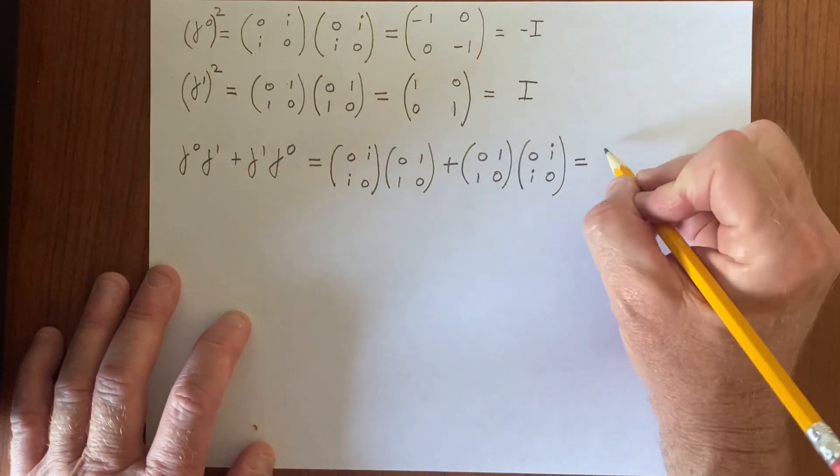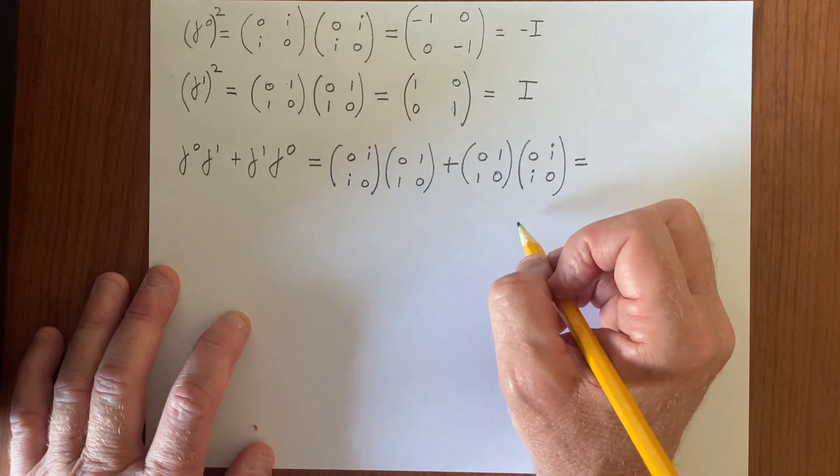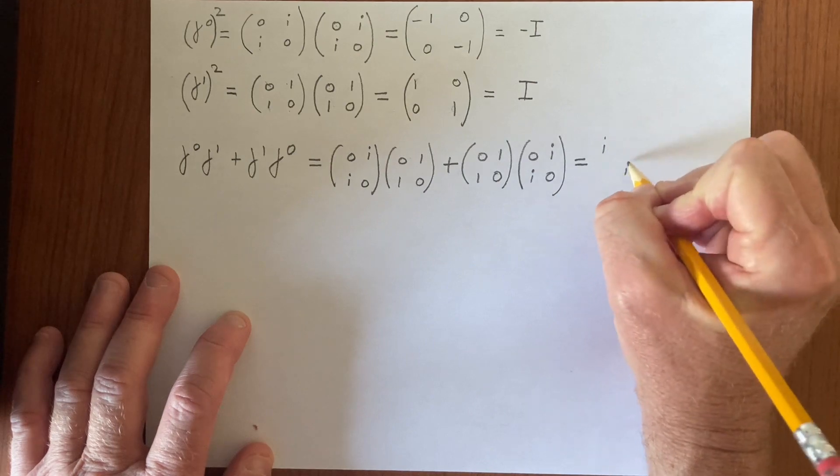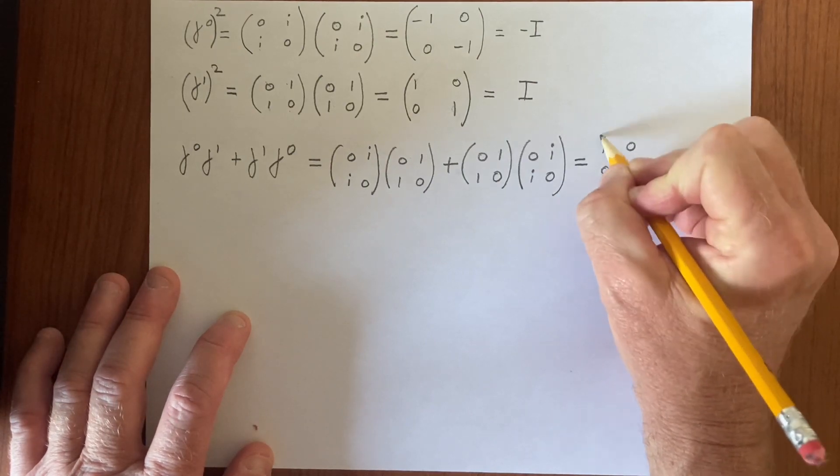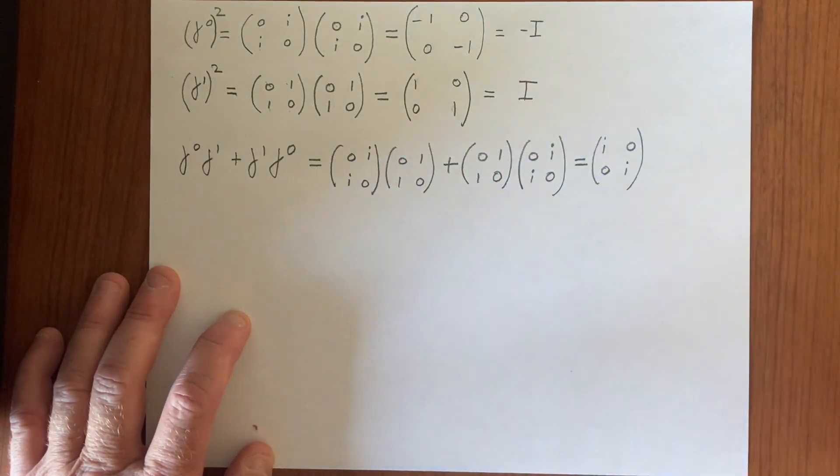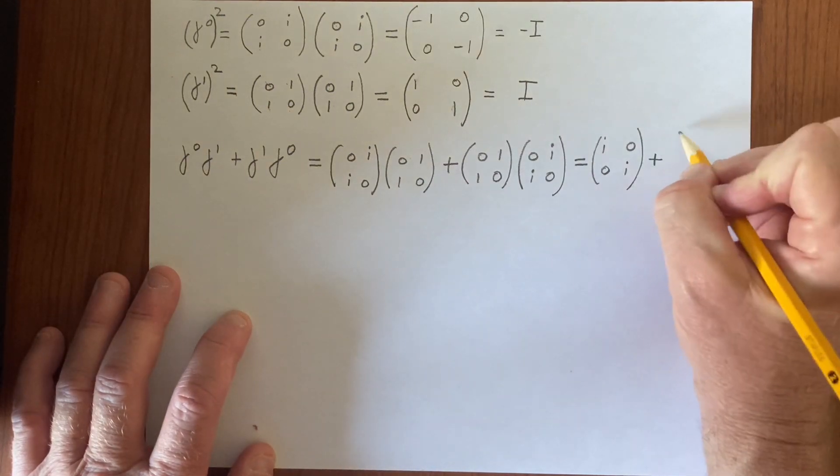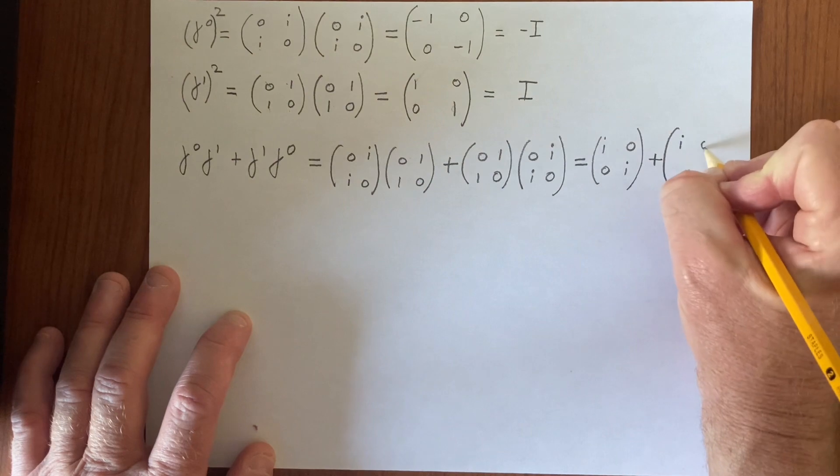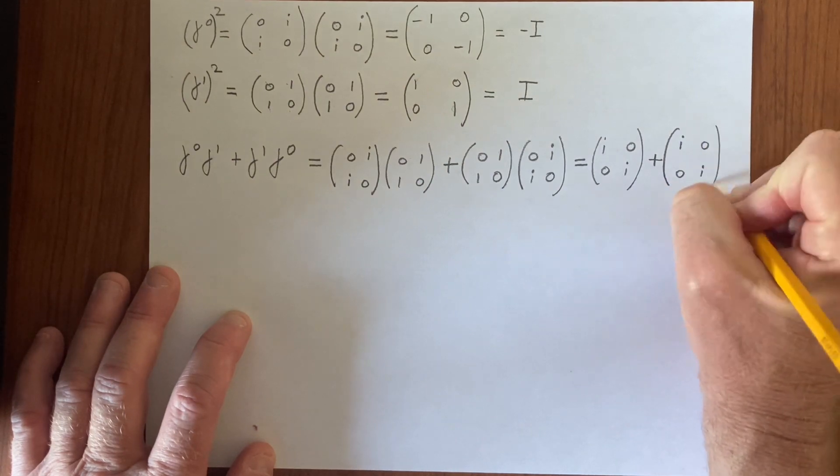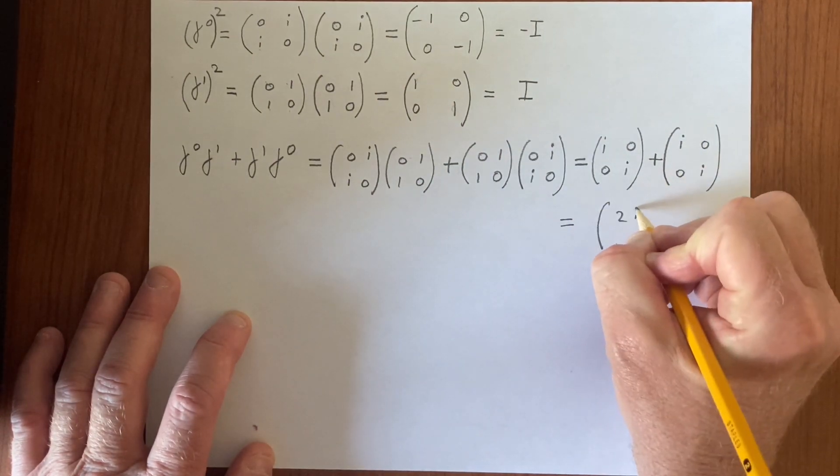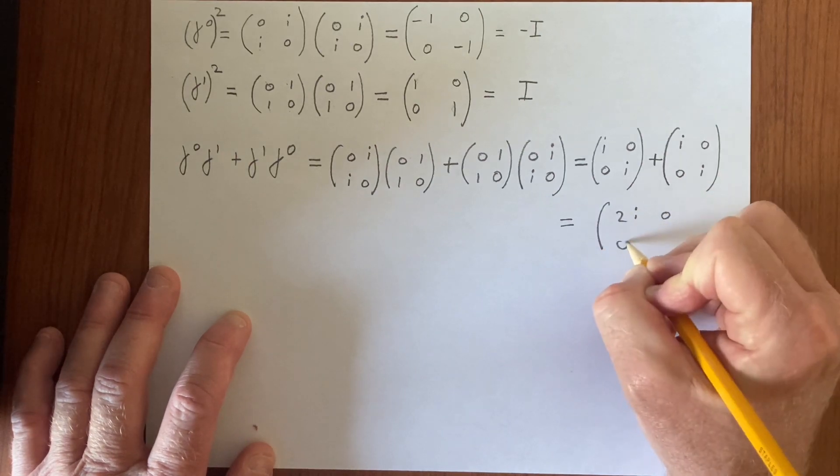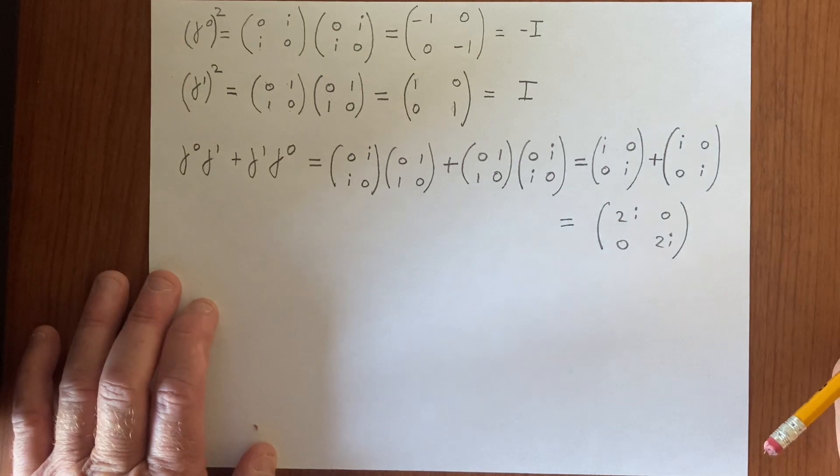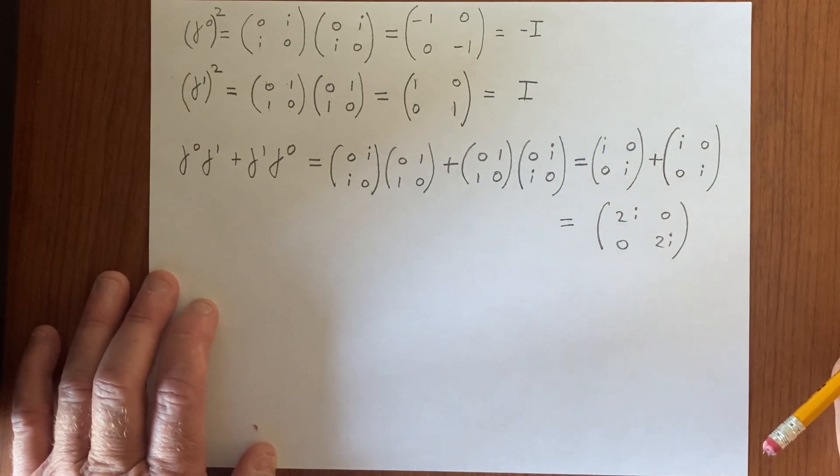And this gives us, it's going to flip these terms onto the diagonal. So we're going to get an i i 0 0 out of this, and the same thing here. So that still doesn't work, because we still get a 2i 0, 0 2i object matrix. And that's not 0.